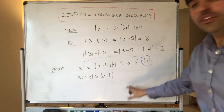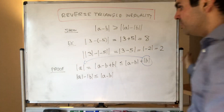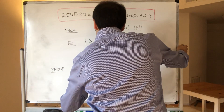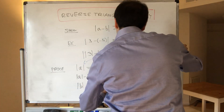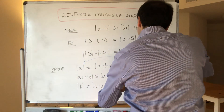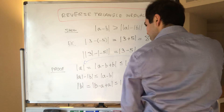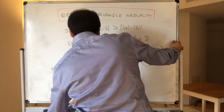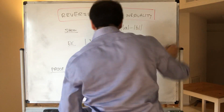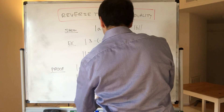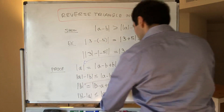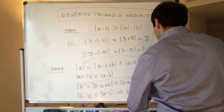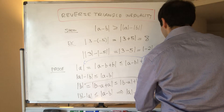On the other hand, you can either just say reverse a and b, or do the proof again. So absolute value of b equals b minus a plus a, which is less than or equal to absolute value of b minus a plus absolute value of a. So putting this on the left-hand side, you get absolute value of b minus absolute value of a is less than or equal to absolute value of b minus a, which equals absolute value of a minus b. In particular, this implies that absolute value of a minus absolute value of b is greater than or equal to minus absolute value of a minus b.